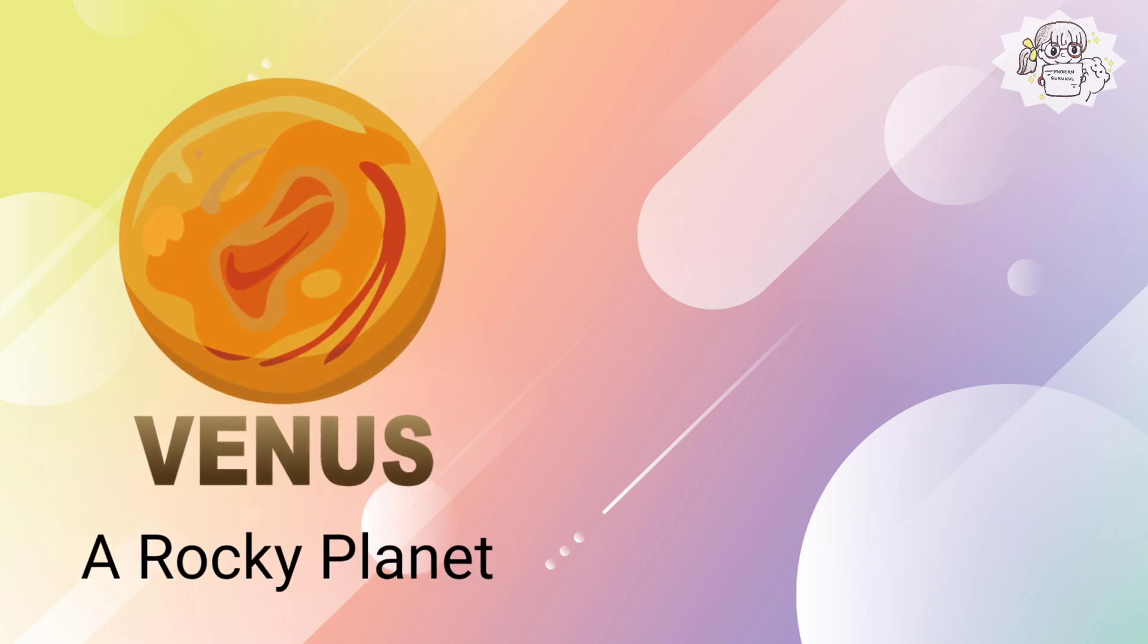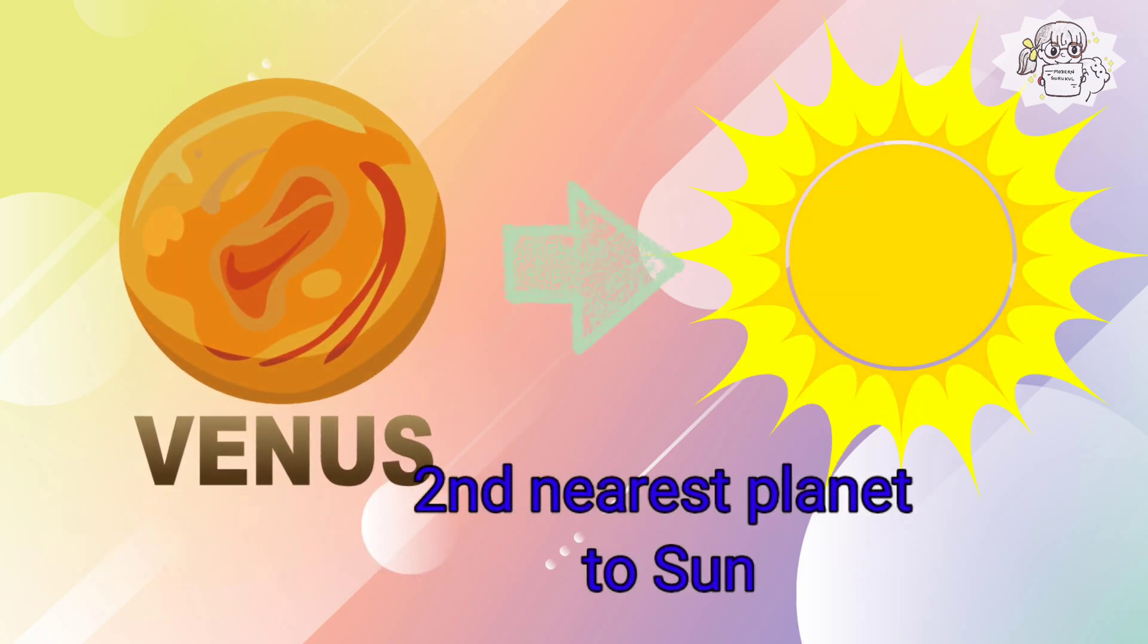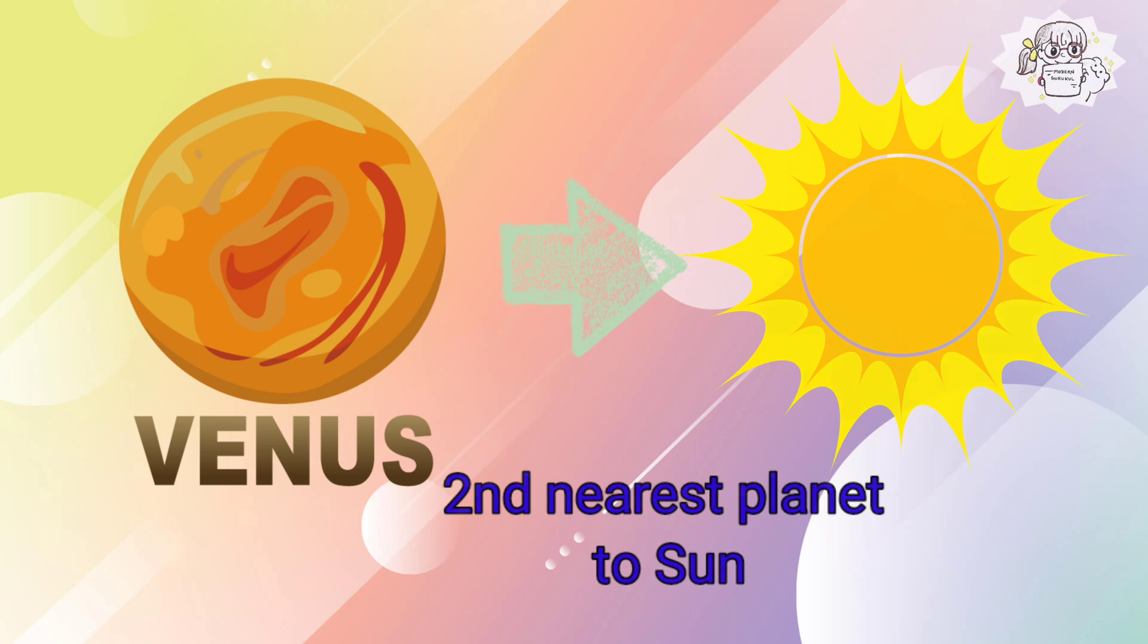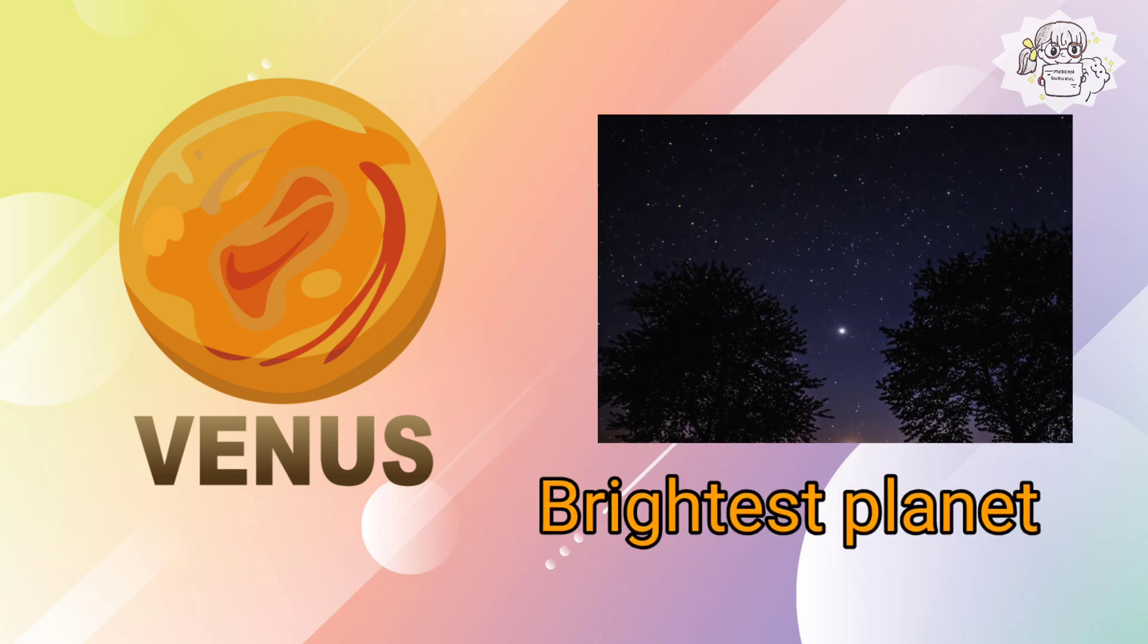Venus is a rocky planet and the second planet from the Sun. Venus is the brightest object in the sky after the Sun and Moon because its clouds reflect sunlight strongly.